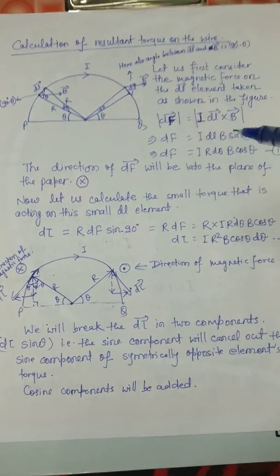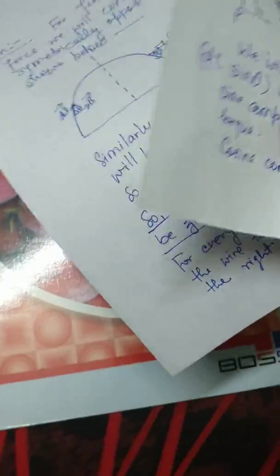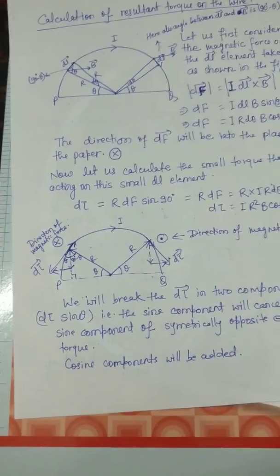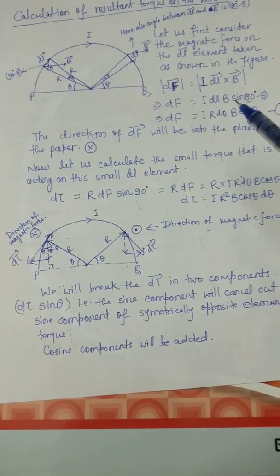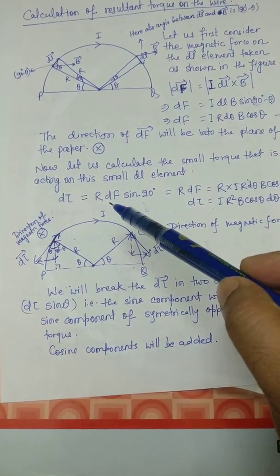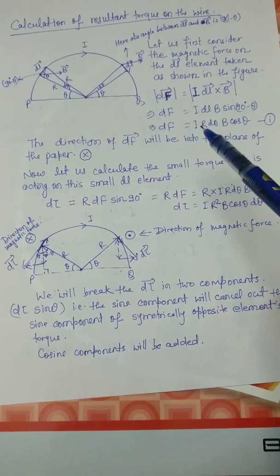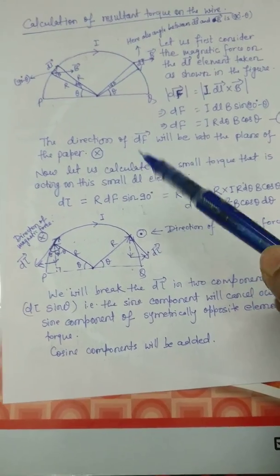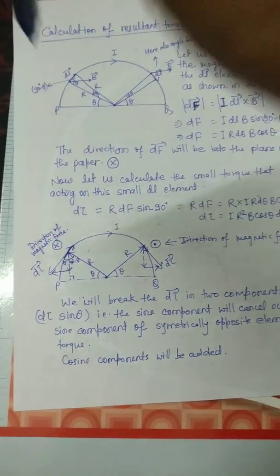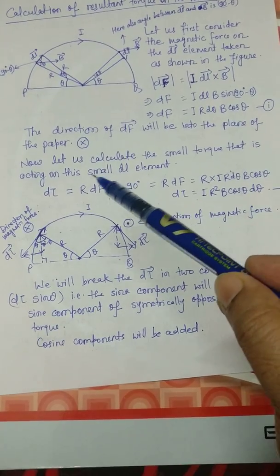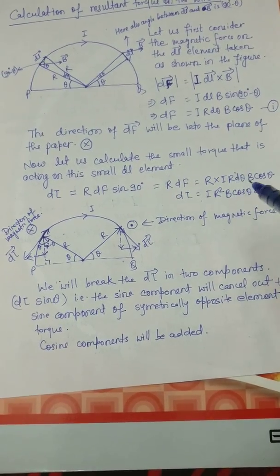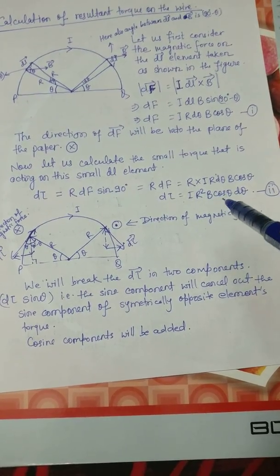Note that this theta is not the same as the previous theta. The direction of dF is into the plane of the paper. The small torque due to this force dF uses the formula torque = R cross F. The angle between R and F is 90 degrees because R is the radius vector and F is directed into the plane, so the angle between them is 90 degrees. Therefore, the torque is I R² B cos theta dtheta.